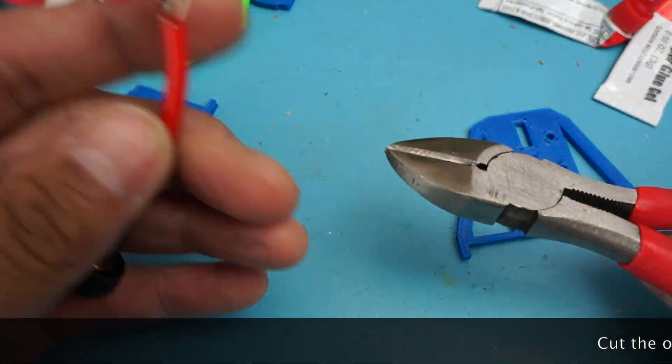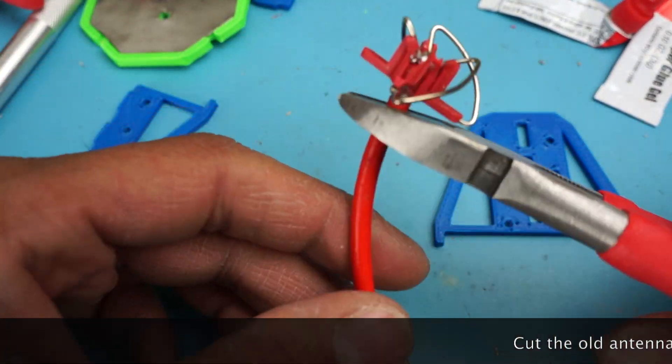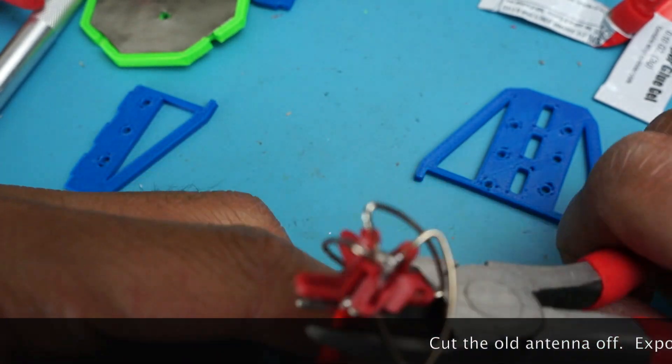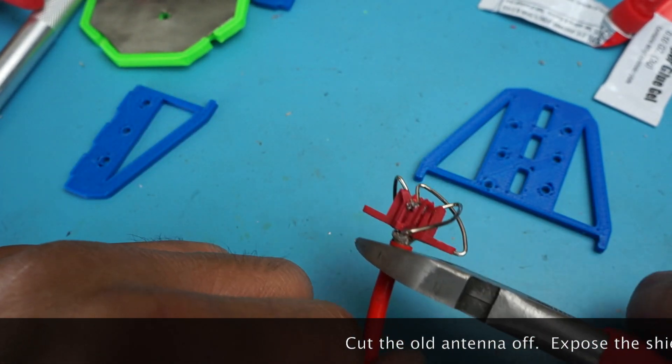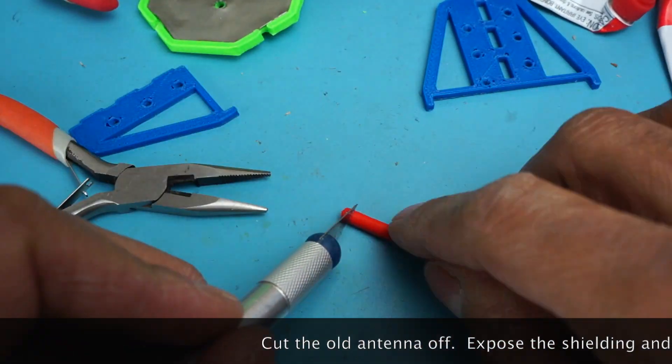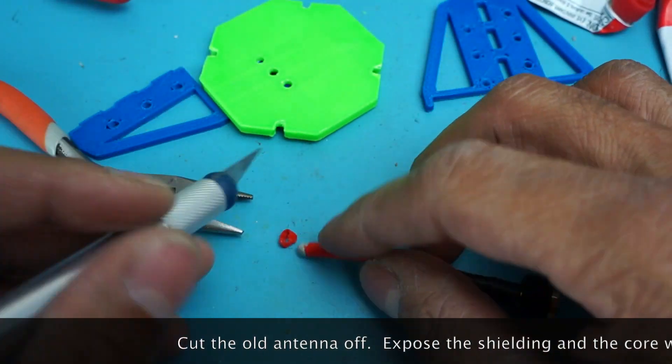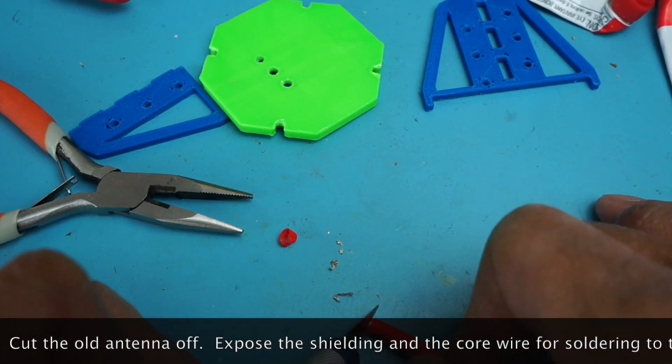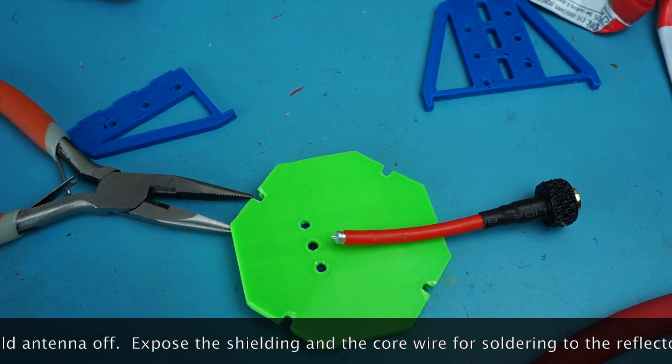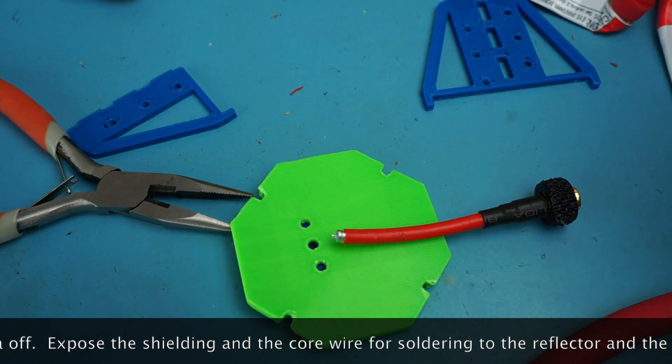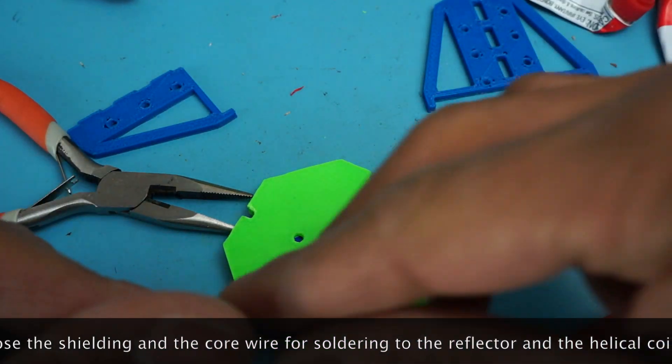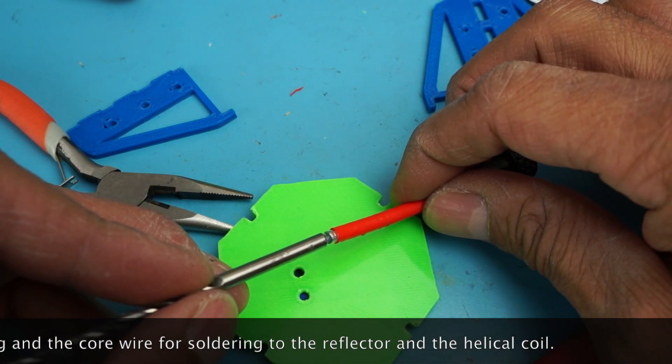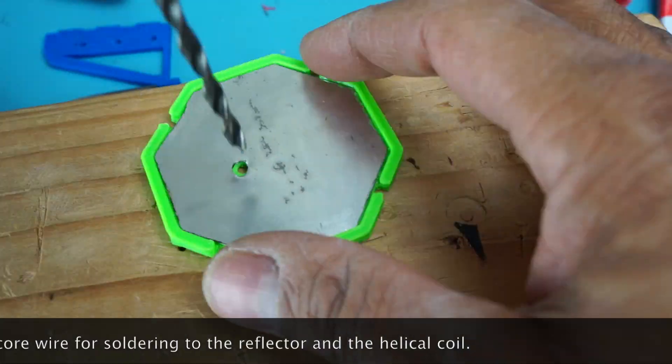Chop off the top of the old antenna because we're just going to use the coax cable. It's really good, nice stiff coax. Just cut off some of the plastic shielding just to expose the shielding cable and the inner core. We're going to use that to solder onto the reflector and the inner helical coil.